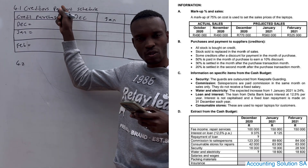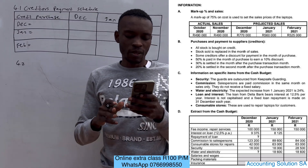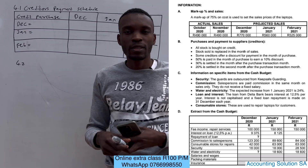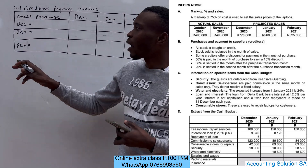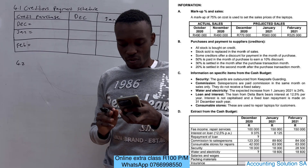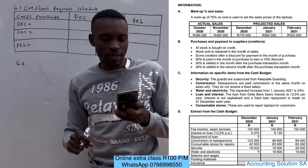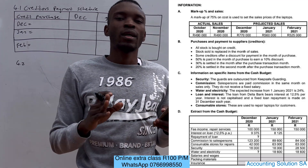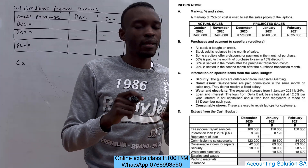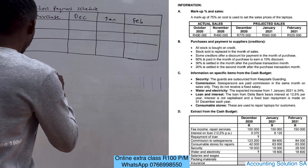We are looking for credit purchases only. Reading information B: all stock is bought on credit, which means that 100 percent of it is on credit. Now let's calculate. Because all stock is on credit, there is no need to separately calculate the percentage of credit purchases.